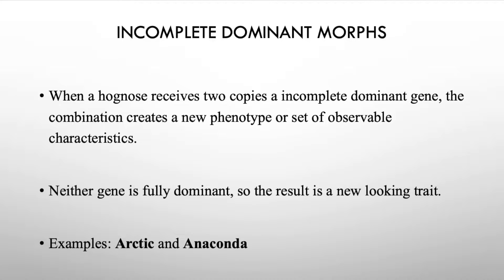If a snake receives one copy of an incomplete dominant trait, you'll visually see that trait just like a dominant. But if you have two copies, you get a whole new looking animal because neither gene is completely dominant — they combine to form a totally different looking animal. The two known examples of incomplete dominant genes in hognose snakes are the arctic gene and the anaconda gene.